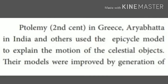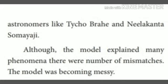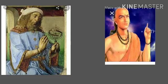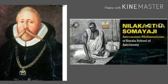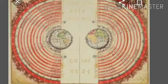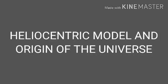Ptolemy in Greece, Aryabatta in India and others used the epicycle model to explain the motion of the celestial objects. Their models were improved by generations of astronomers like Tycho Brahe and Neelaganda Somiyaji. Although the model explained many phenomena, there were a number of mismatches and the model was becoming messy. So far in this session, we have studied about geocentric theory and epicycles. In the next session, we will see about the heliocentric model and the origin of the universe. Thank you children.